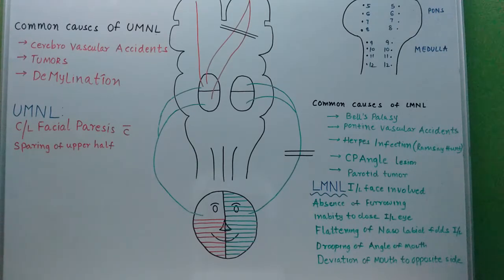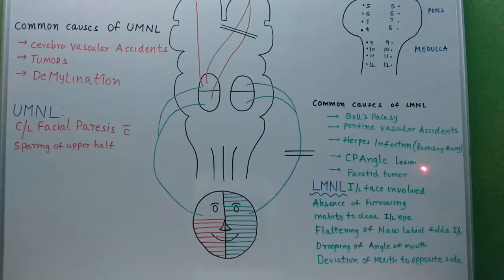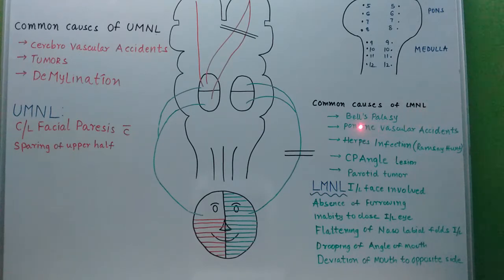The common causes for lower motor neuron lesions are Bell's palsy, pontine vascular accidents, herpes infection — also called Ramsay Hunt syndrome — cerebellopontine angle lesions such as acoustic neuromas, and parotid tumours.